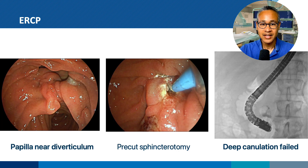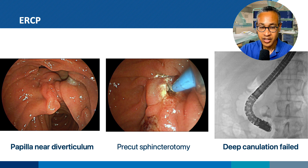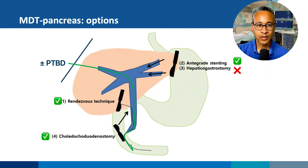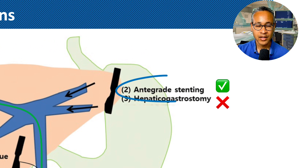In order to facilitate this, an ERCP was ordered for biliary drainage, but unfortunately the papilla was located near a diverticulum, requiring pre-cut sphincterotomy, and in the end deep cannulation failed. Drainage options were re-evaluated: hepatogastrostomy was not preferred by the surgeon due to future surgery. EUS rendezvous technique remained, as well as choledochoduodenostomy and EUS anterograde stenting, as well as PTBD as a salvage option. We chose EUS biliary drainage.